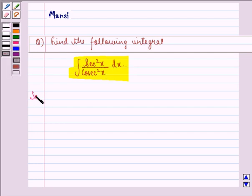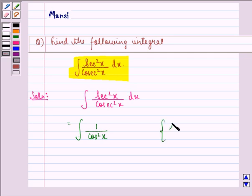Let us see the solution to this question. We have to find the integral of sec²x divided by cosec²x dx. This can be written as the integral of 1/cos²x, because secant x is equal to 1/cos x.